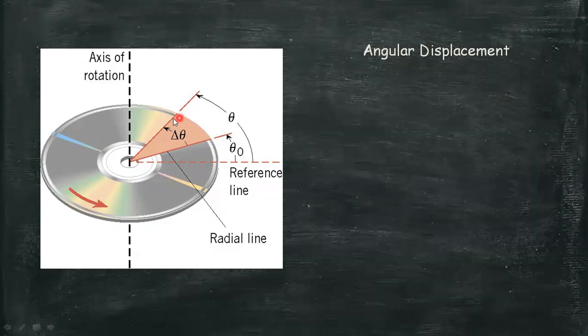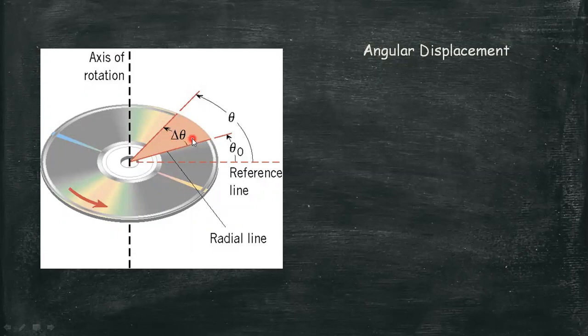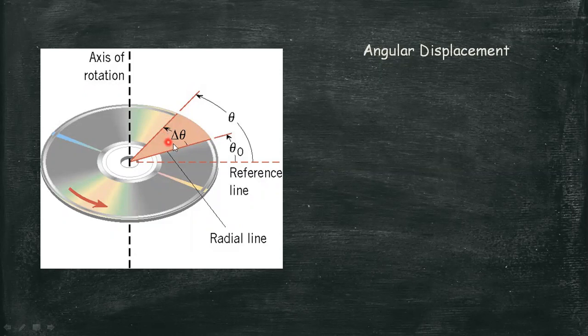Therefore, angular displacement or delta theta is equal to the difference of theta and theta naught.